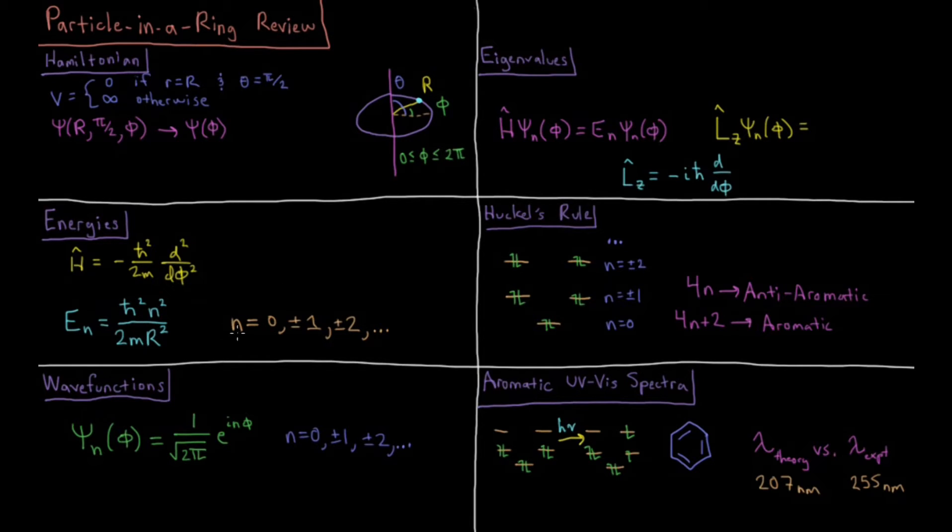The values of n, the quantum number that end up being allowed, are 0, plus or minus 1, plus or minus 2, etc., where n is an integer. This is very similar yet slightly different to the particle-in-a-box system, where because of our different boundary condition, now n equals 0 is allowed as a state, and we get doubly degenerate eigenvalues. We have n equals plus and minus 1, both give the same energy because n gets squared.